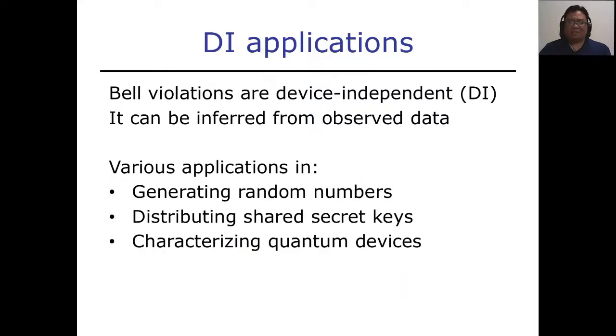Bell violations are interesting because they are device independent. This means that we can determine it just from the observed data. This leads to many useful applications, which include the generation of certified random numbers, distribution of a shared secret key between two distant parties, or to verify that a quantum device is functioning properly.